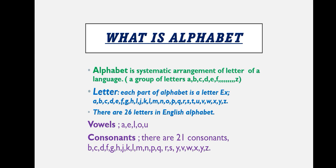So there are 26 letters in English alphabet. You should not say alphabets. It's wrong. So the total group of letters is called alphabet. Vowels. In English alphabet, there are 26 letters.